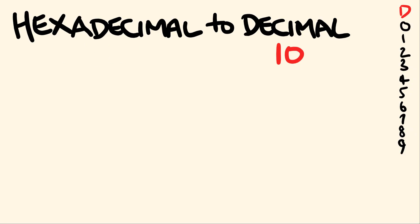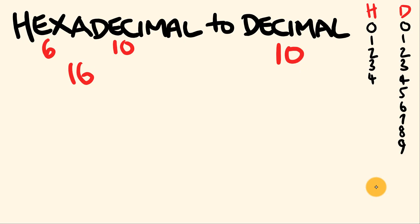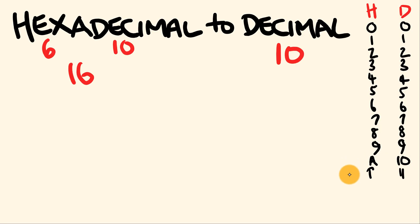With hexadecimal, we have extra digits to choose from. This is a base 16 — hex means 6, dec means 10, 6 plus 10, so base 16 counting system. With hexadecimal, we have the same digits to start: 0 through 9, equivalent between hexadecimal and decimal. But then we go to A for 10, B for 11, C for 12, D for 13, E for 14, and F for 15. Those are the digits we use for hexadecimal.